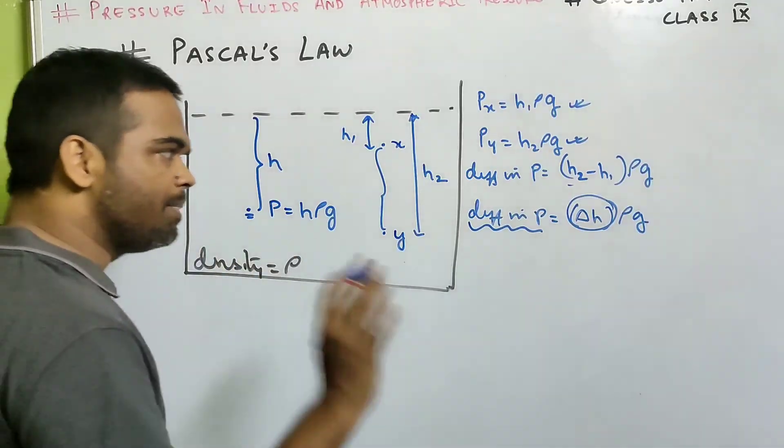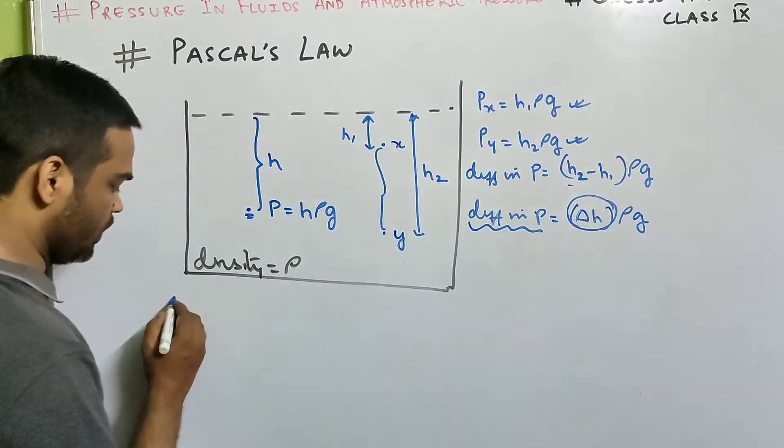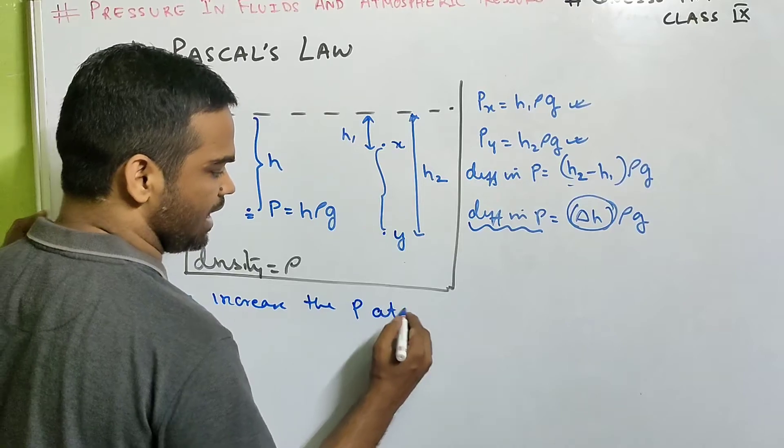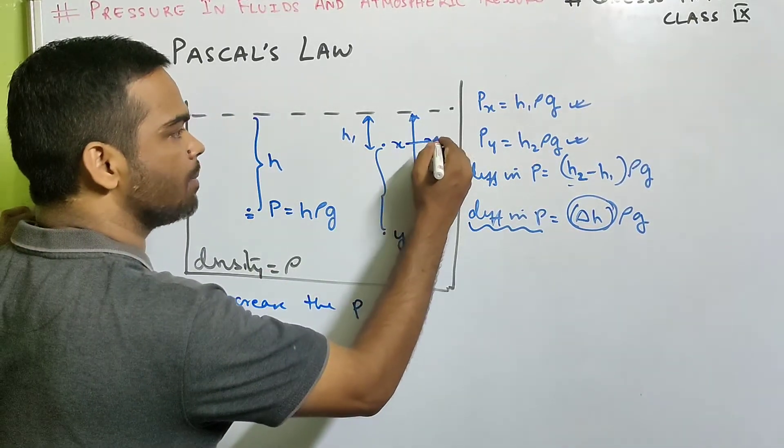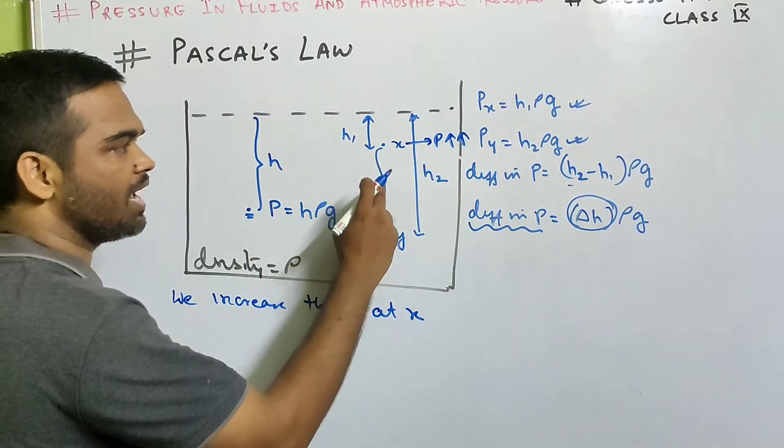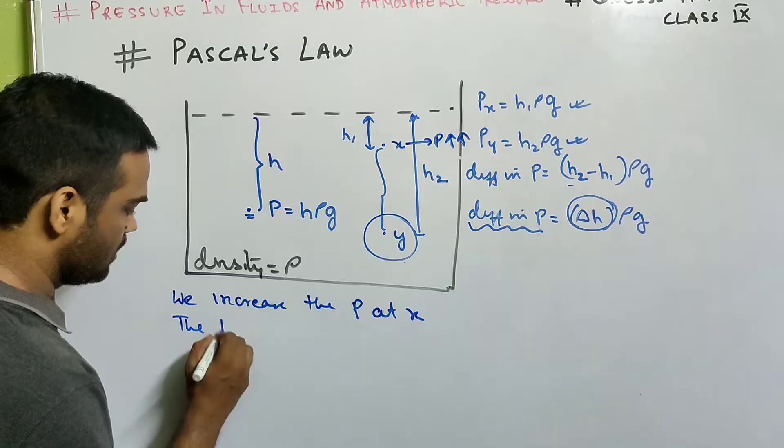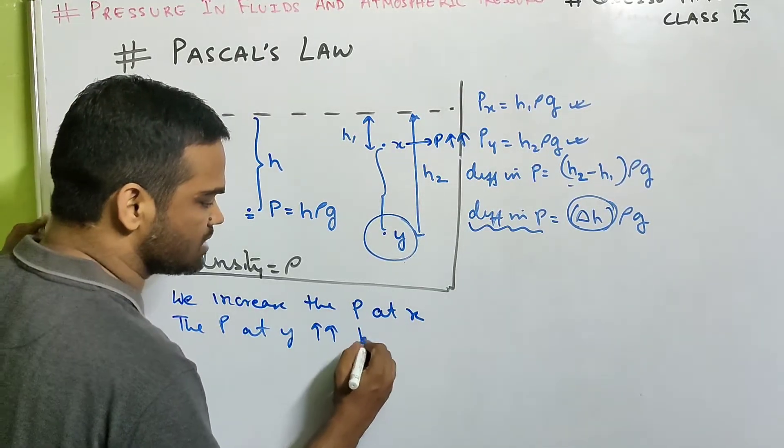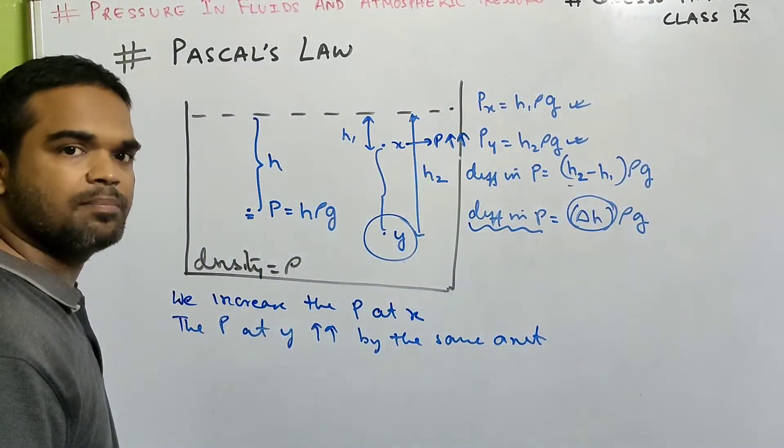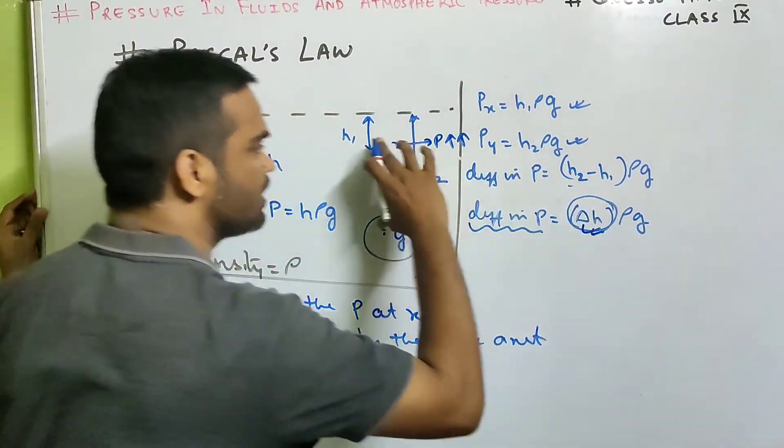Difference of height. Which means if somehow we increase the pressure at x. Now the difference of pressure between x and y has to be same, which means the pressure at y, the pressure at y increases by the same amount. Because the difference in pressure will be same. Because difference in pressure depends upon the vertical height between them.